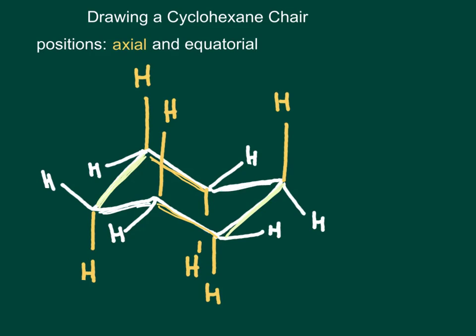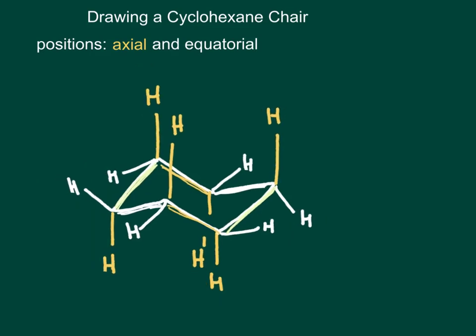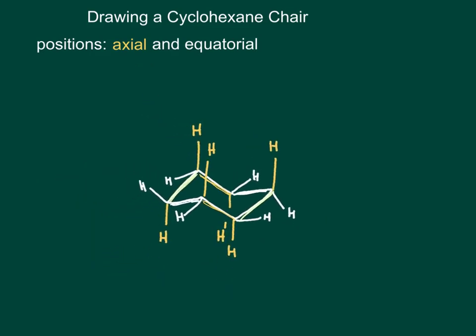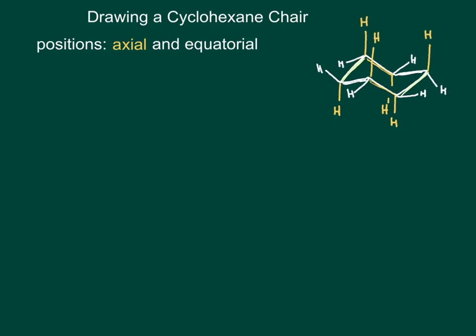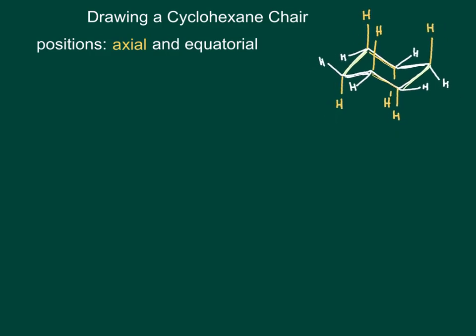Noticing those parallel bonds in the drawing is going to help us draw a better cyclohexane chair. You can also notice that we have the letter W here, and back here we have a letter M. When we compare the positions of these equatorial hydrogens and some of the carbon-carbon bonds in the structure, we can look for patterns that are going to help us draw a better cyclohexane chair. Let's put this up here for reference so we can keep an eye on it and get to drawing our own chair.